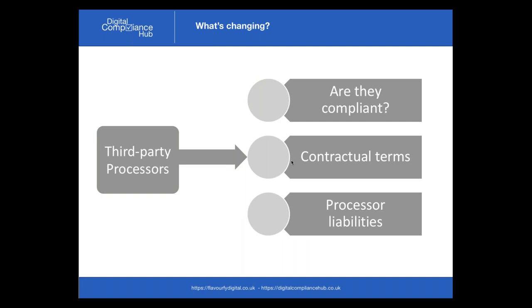One of the key areas changing is third-party processors. Under the Data Protection Act, if a processor was the cause of a breach, it would typically be the controller who got into trouble. Under the GDPR, that's all changing — not only will the controller possibly get into trouble, but the data processor will as well. There are now processor liabilities that didn't exist in existing data protection law. It's important to think about whether you are a data controller, a data processor, or in some circumstances, a bit of both.